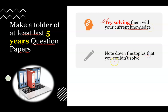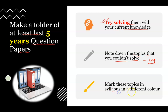Second, note down the topics you couldn't solve. If you are a beginner — whether you've just completed your master's or are in your first year — you will have topics you can't even identify where they are asked from. Identify the subject or topic name and note them down; you would later emphasize on these topics. Third, mark those topics in the syllabus in a different color — for example, if a question was on vulva development in C. elegans, find and highlight that in the syllabus.